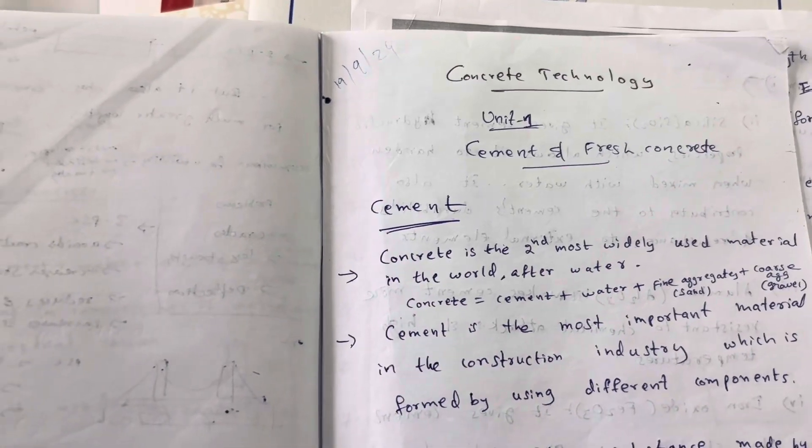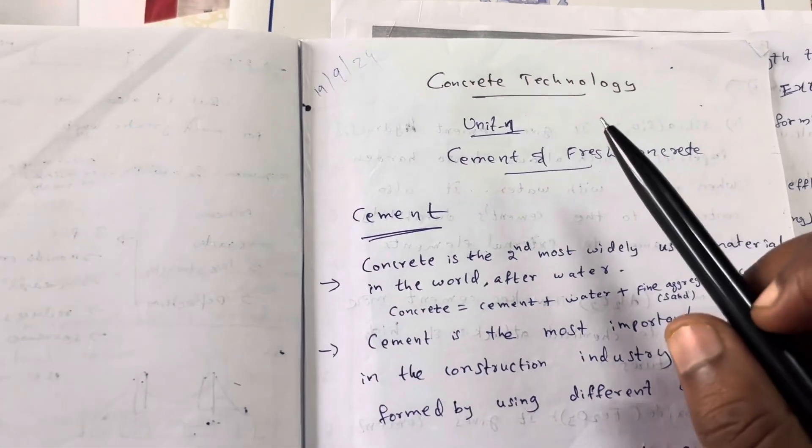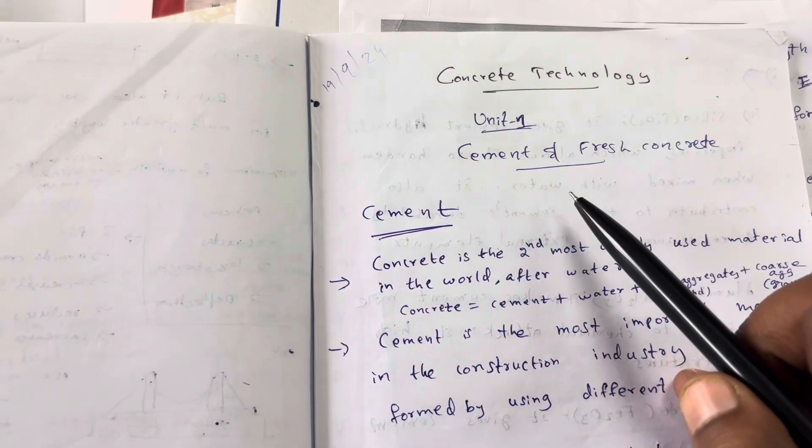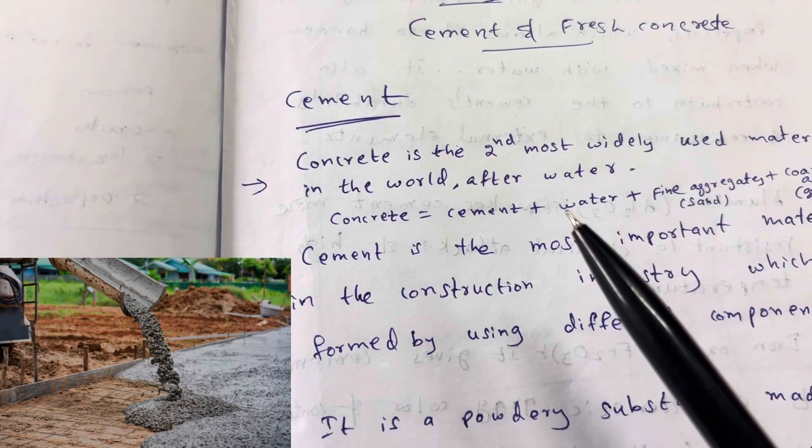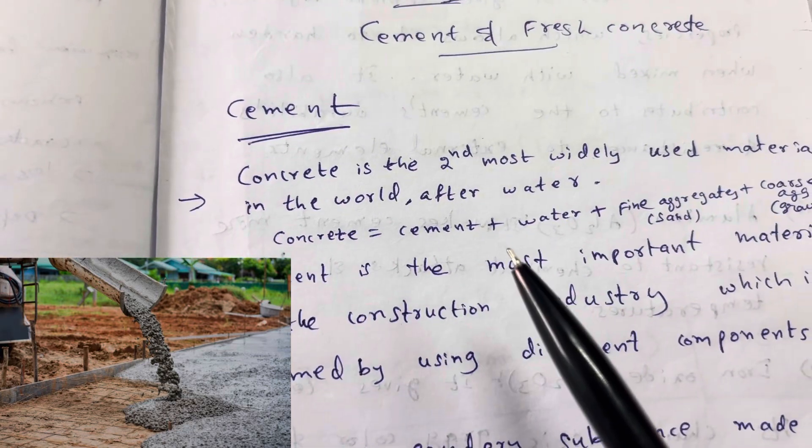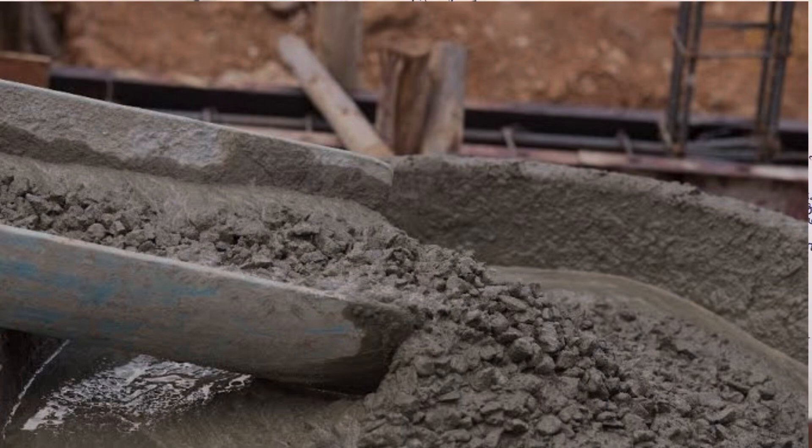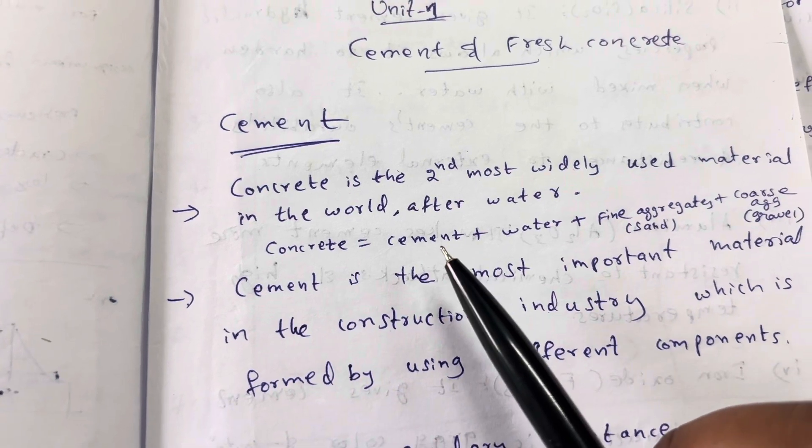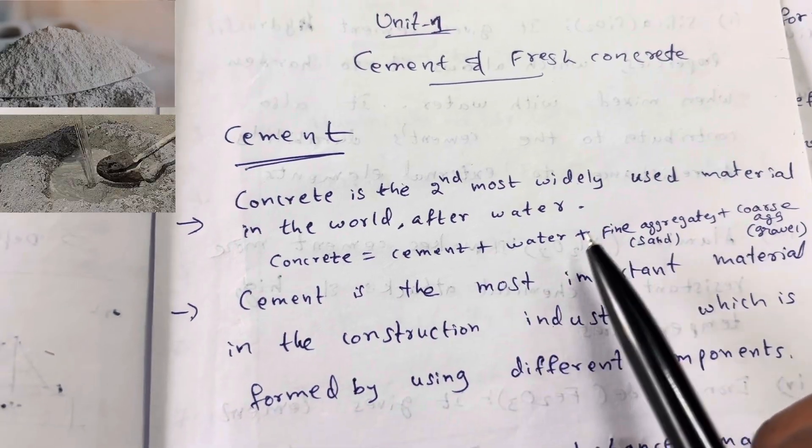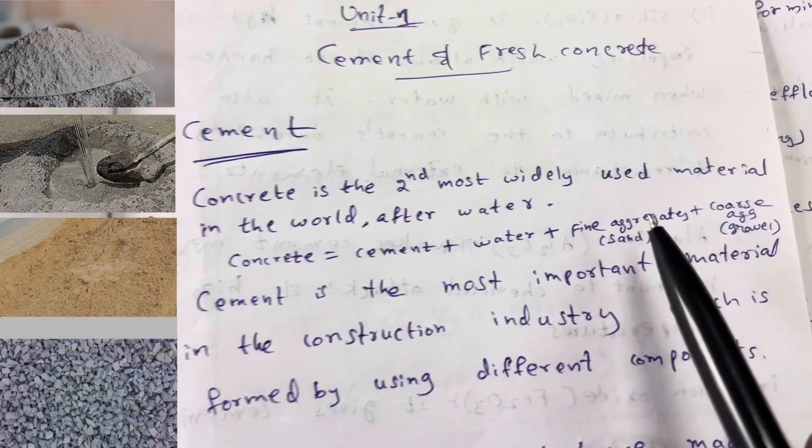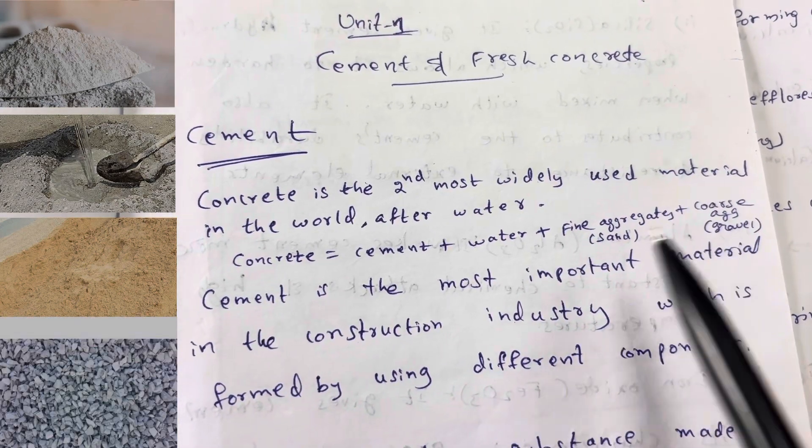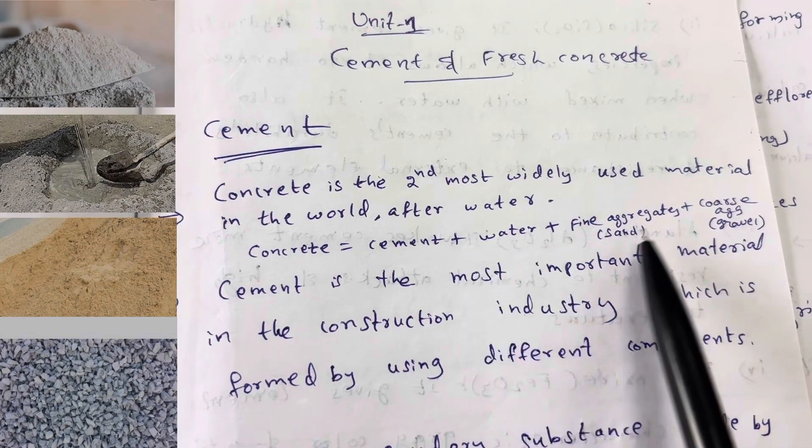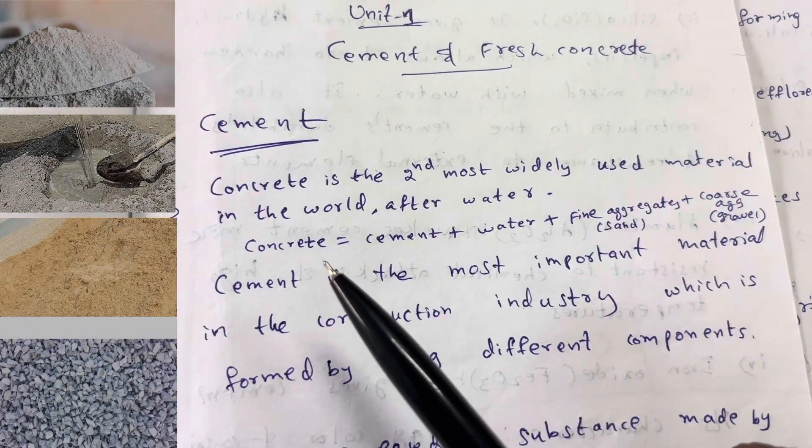Hi, this is Dr. Jivikas Paul. In this session we are going to discuss concrete technology, specifically cement and fresh concrete. Concrete is the second most widely used material in the world after water. Concrete is a mixture of cement, water, fine aggregate like sand, and coarse aggregate like gravel. The combination of all these materials forms concrete.